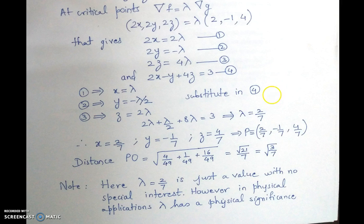And now let me just comment on this lambda. You notice we have not used the value of lambda as itself, because its value 2 by 7 is just a value which has no special interest in this particular example. However, in physical applications, lambda may have physical significance. For example...